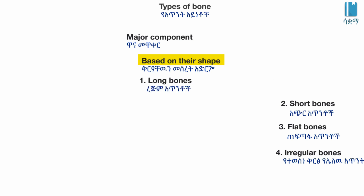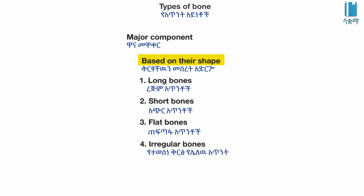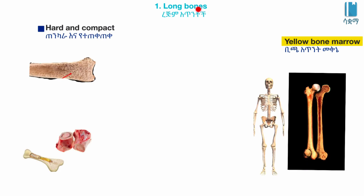The types include: long bones, short bones, flat bones, and irregular bones. Let us start with long bones.